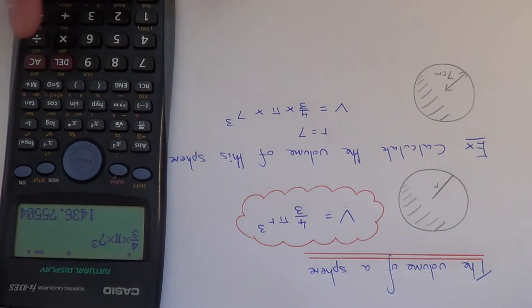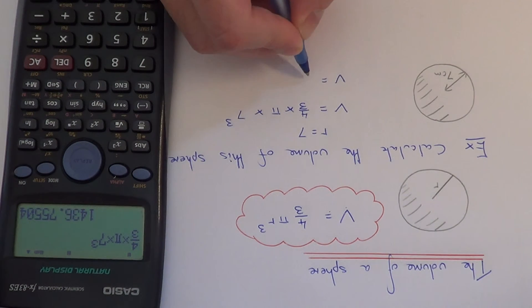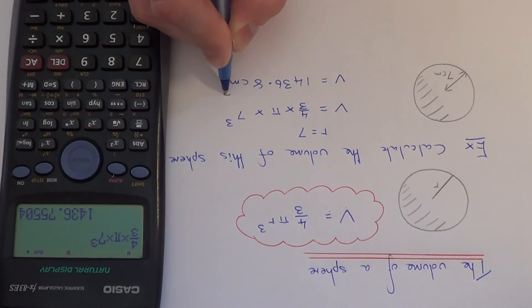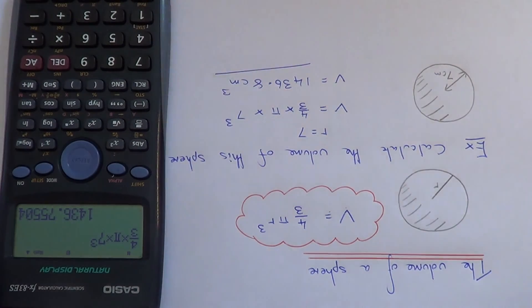To one decimal place, our answer will be 1436.8 centimetres cubed. Thanks for watching.